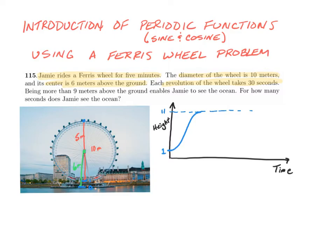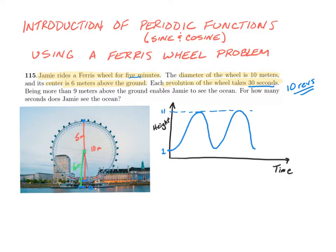The highest that Jamie gets is 11 above the ground, so I'm going to put a dotted line at 11. Jamie's going to ride this for 5 minutes — going up and coming down, going up and going down. If one revolution takes 30 seconds and he's on there for 5 minutes, that means it would take 10 revolutions, because he's going 2 revolutions per minute for 5 minutes. I'll stop at 2 revolutions here. We know that this would be 30 seconds, and that's 1 minute.